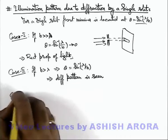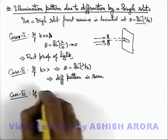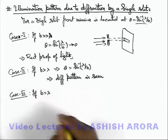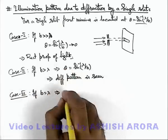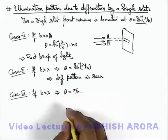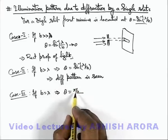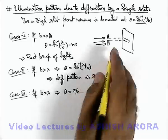Now if we consider a situation of Case 3 where the value of b is equal to lambda, and if b is equal to lambda, then in this situation the value of theta we are getting here is sine inverse of 1, that is pi by 2. That means the first minima or the width of central maxima is extended up to infinity if theta is pi by 2.